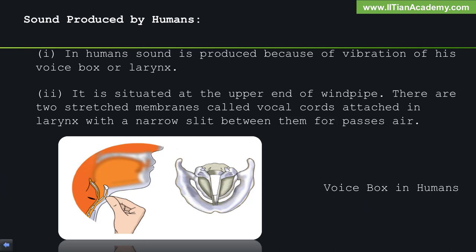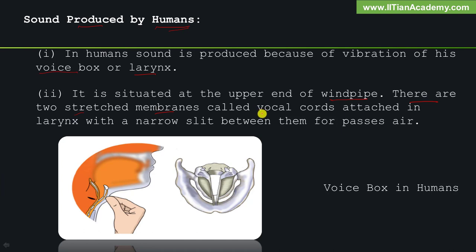In this slide, we will learn how sound is produced in human beings. In humans, sound is produced because of vibration of the voice box or larynx. It is situated at the upper end of the windpipe. There are two stretched membranes called vocal cords attached in the larynx with a narrow slit between them through which air passes.